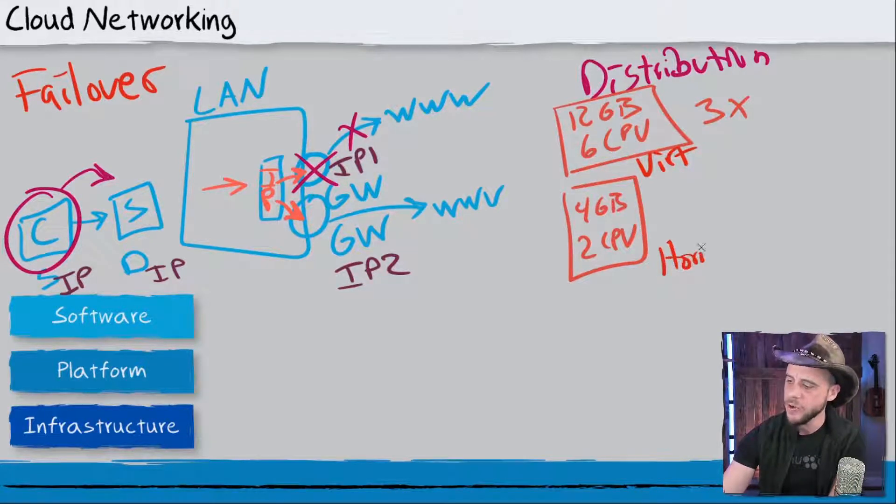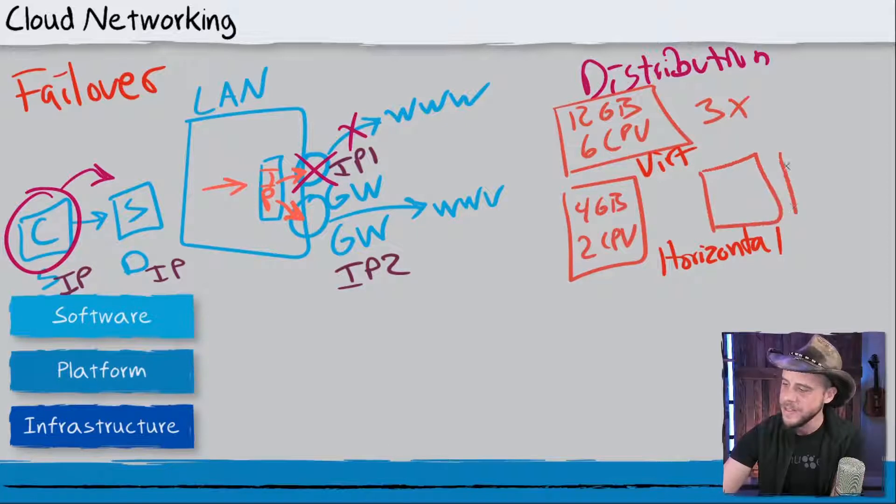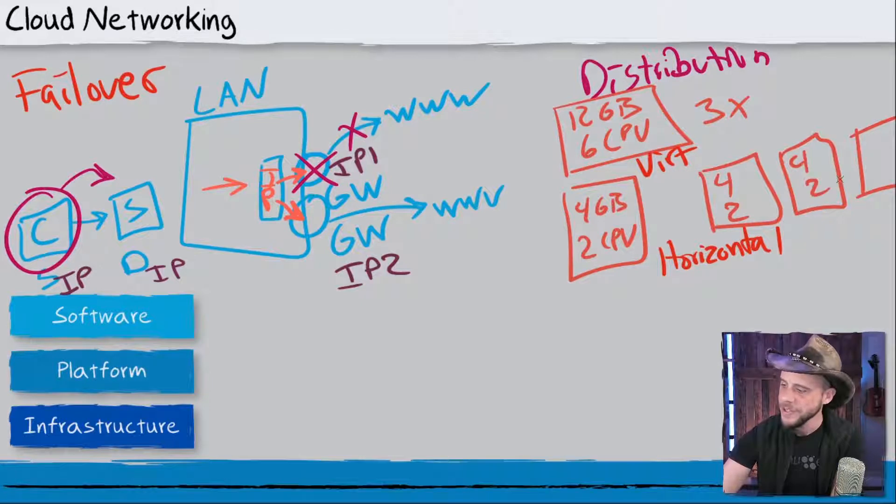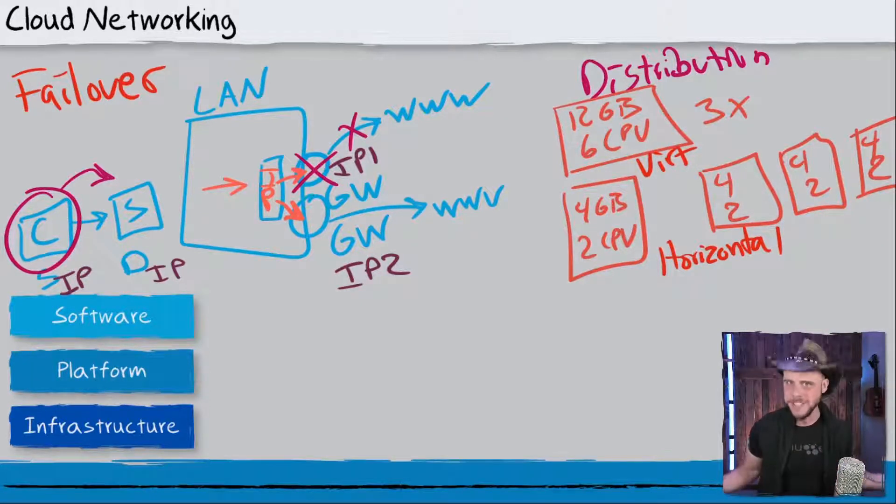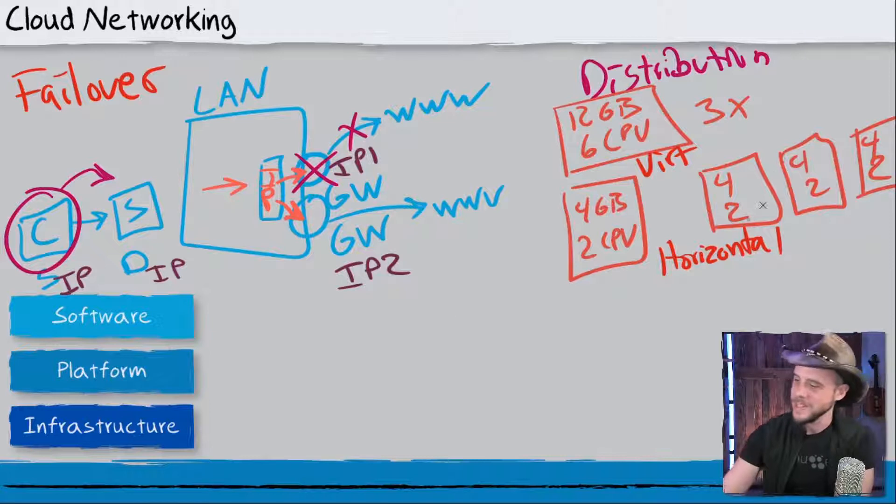So the alternative to vertical scaling, which is where we add more compute power, would be something like horizontal scaling. And then if we are looking at horizontal scaling, same scenario, we want it to handle three times as much traffic, then we would build three systems with the same amount of power on them. And now we have three systems to handle the work. The theory being that three systems can handle three times as much work, but we're now back in that same problem that we had before, where we have three different destinations and no way to tell our clients what to use.